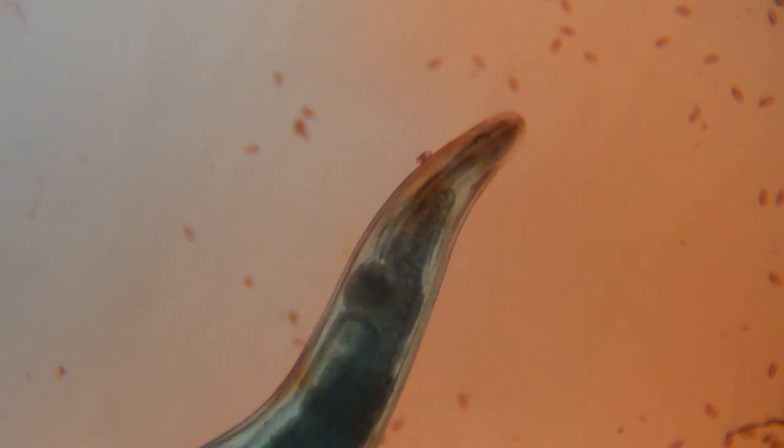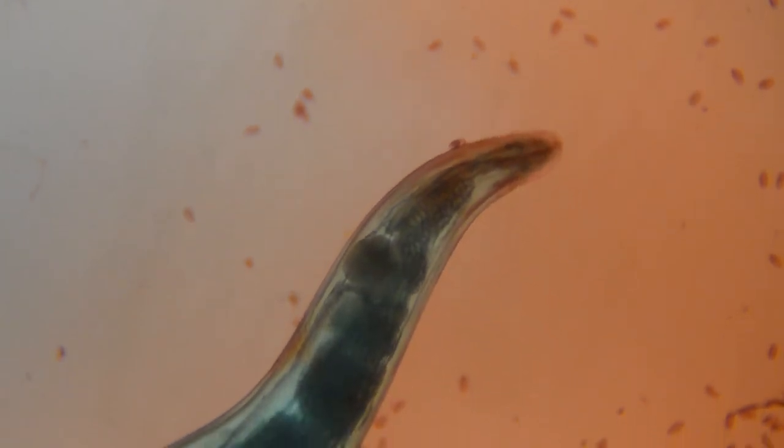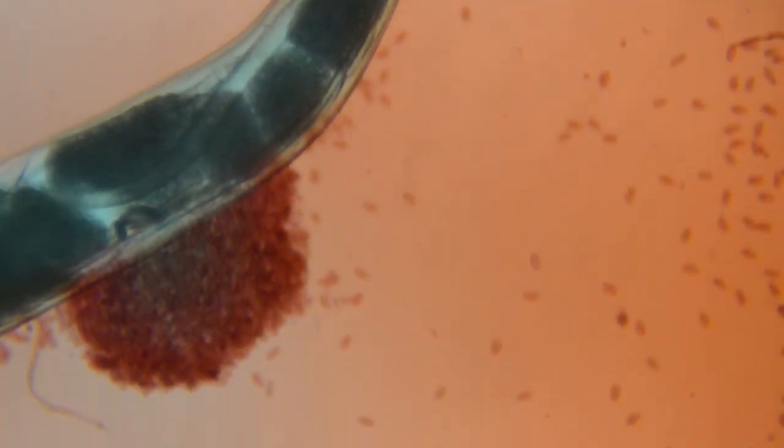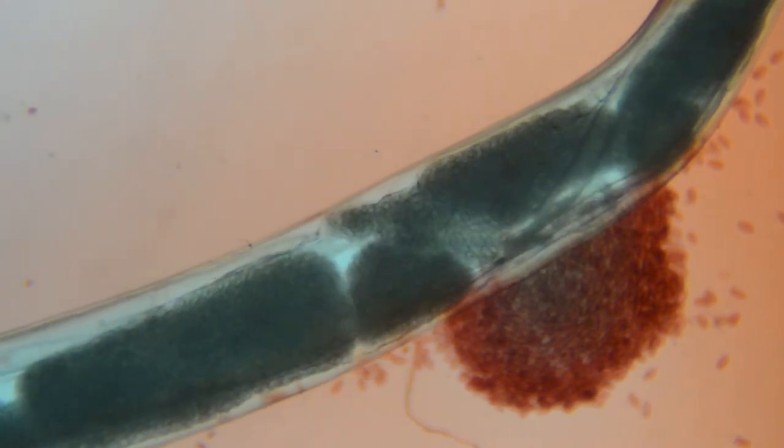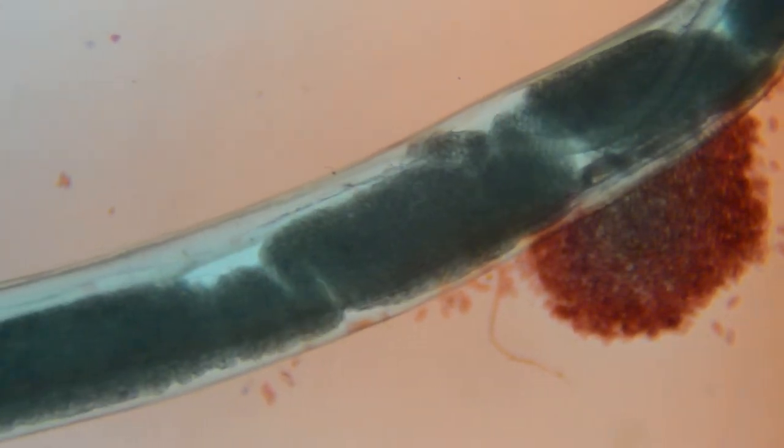Inside of Penelope is the digestive system and the reproductive system. As we move backwards, we can see all the eggs that she is producing. Penelope pinworm can produce over 10,000 eggs on her insides.